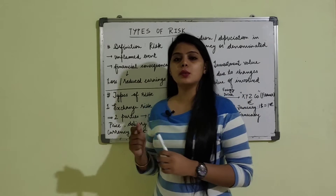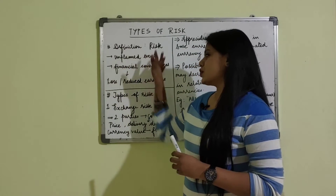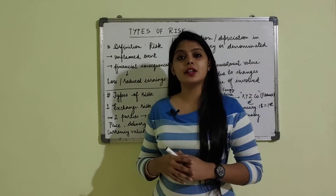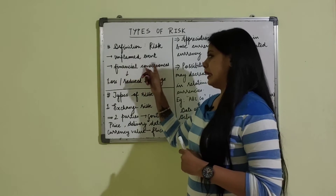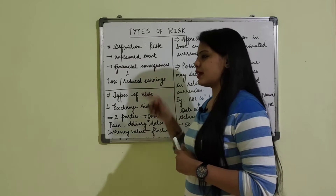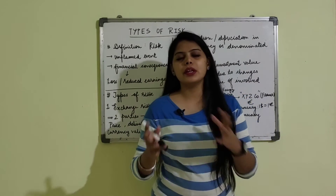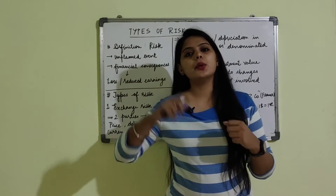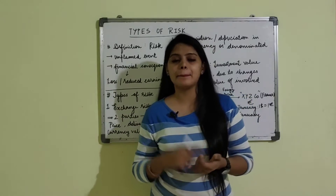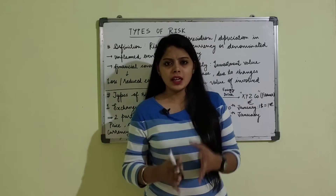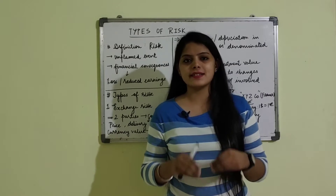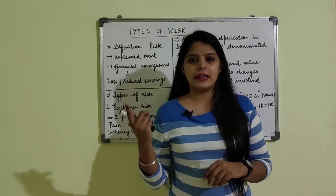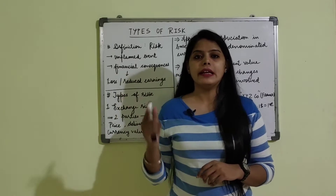First, we have to learn what is risk — the definition of risk. I have taken two keywords for explaining what risk is: first is an unplanned event, and second is financial consequences. A risk is always related to an unplanned event which can happen in the near future. It is not related to the present situation but is relative to a future date — it is related to any future event.